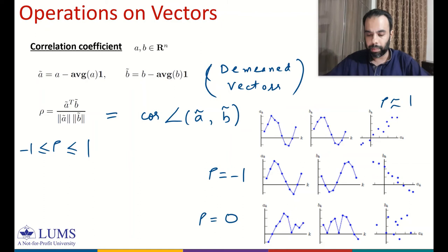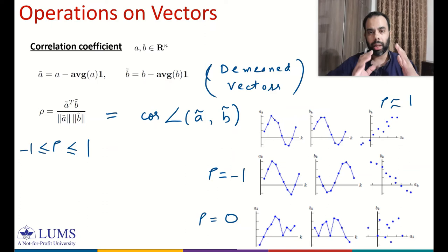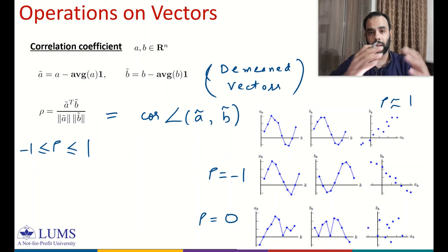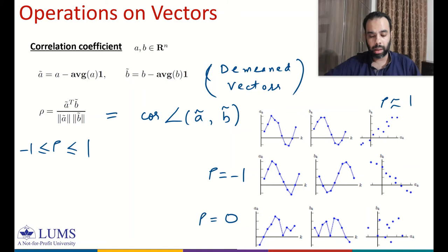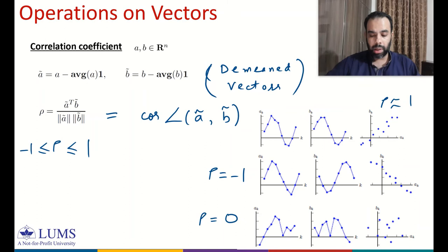The correlation coefficient is equal to 1 when vectors are aligned or vary together, minus 1 when they are anti-aligned, and zero when they are orthogonal to each other. So we have talked about distance and angle to compare two vectors, and using angle we have also defined the correlation coefficient which can also be used to compare vectors.